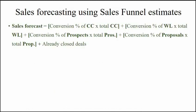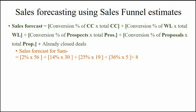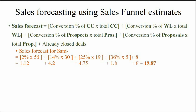Sales forecast is done by multiplying the conversion rate with the value of the estimate at each step, then adding all these to the already closed deals. For Sam, we multiply the cold call conversion rate of 2% with 56 cold calls, the warm leads conversion rate of 14% with 30 warm leads, the prospects conversion rate of 25% with 19 prospects, and the proposals conversion rate of 36% with 5 proposals. Then we add all of these to the 8 already closed deals from April.